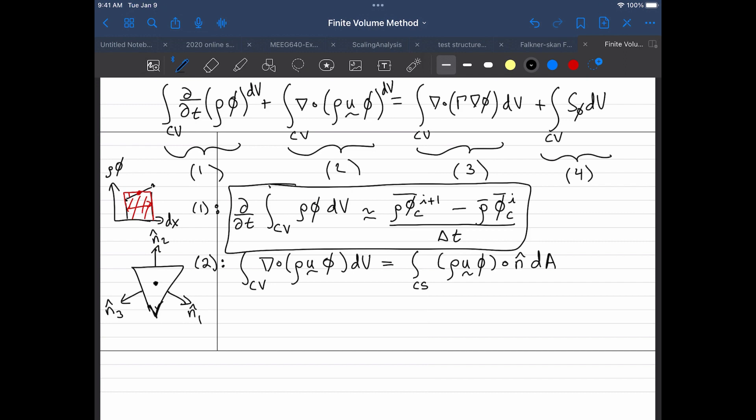A different way. So since we will always have objects that have a certain number of sides to them rather than curved objects, what I can do is I can write this as a sum over all the faces. I'll just call that F. So those are my faces. So I can write this as rho u phi dot n hat.